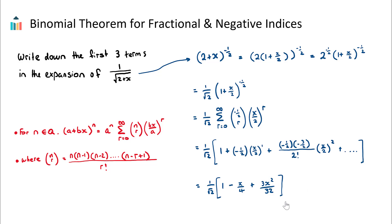So this is our final answer — the first three terms in our expansion. In conclusion, this is quite an extension on from the basic binomial theorem. For these types of questions, we don't need to prove any of these formulas — that's not in the scope of the Analysis and Approaches course. We just need to get the inner bracket to start with a one by factorizing at the start, and then we can use this expansion formula. I encourage you to practice two or three of these questions in your textbook. Good luck.